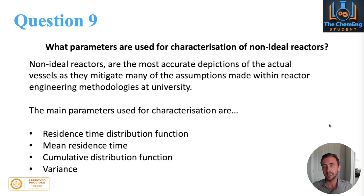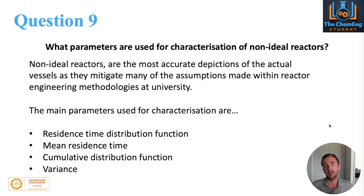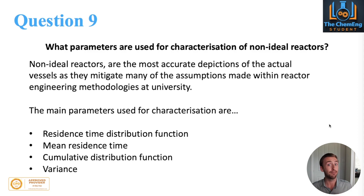In order to categorise non-ideal reactors, the key parameters you need are: the residence time distribution function, the mean residence time (the amount of time material spends inside the vessel), the cumulative distribution function, and the variance. These allow you to find things called the dead spot and bypass rate. Assumptions like perfect mixing and steady state don't actually exist — they are completely fictitious — so in non-ideal systems, these parameters account for discrepancies in the models.